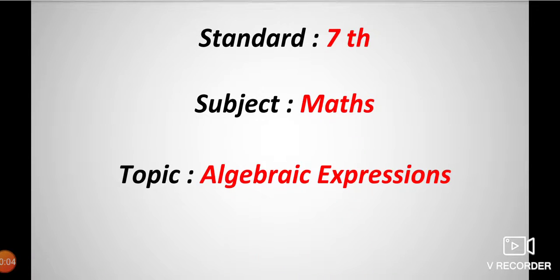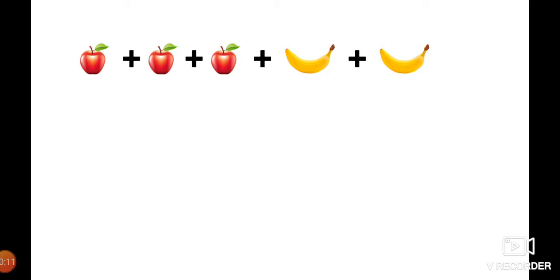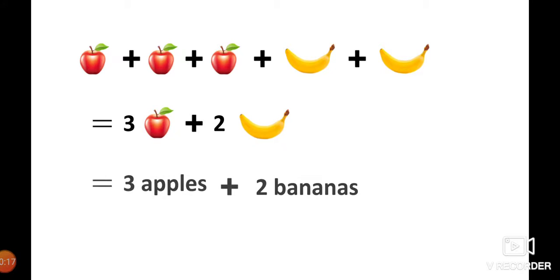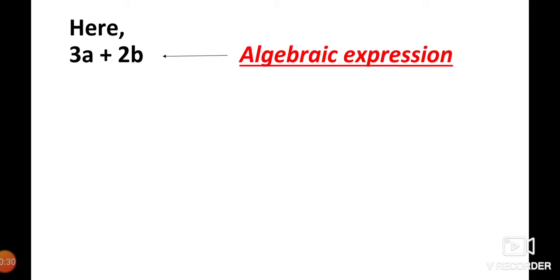Hello students, today we are going to learn a new topic: algebraic expressions. See this picture — in this picture we see there are three apples and two bananas. Instead of the word 'apple' if we use the letter a, and for 'banana' if we use the letter b, then we get the expression 3a + 2b. Here, 3a + 2b is an algebraic expression.